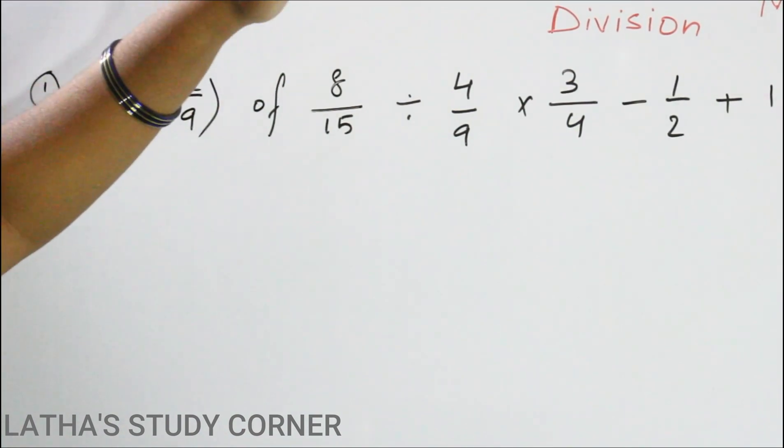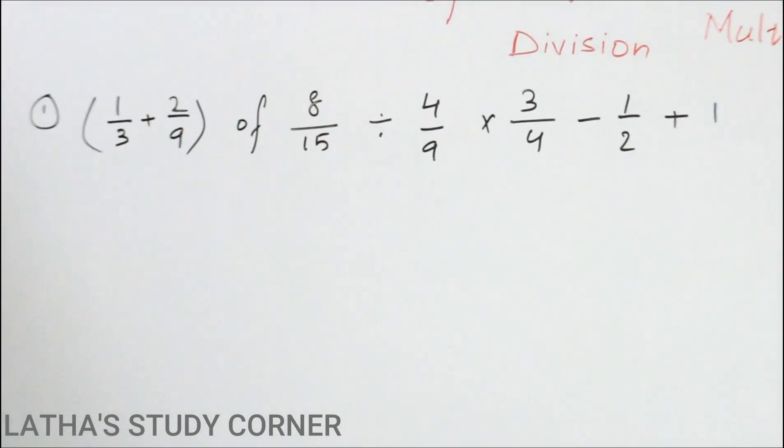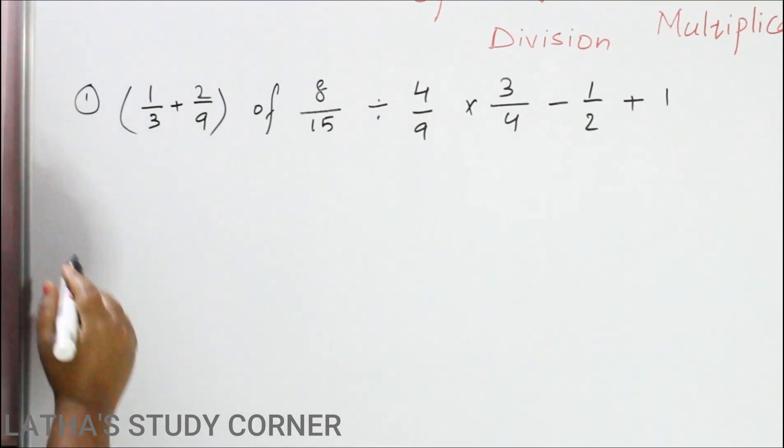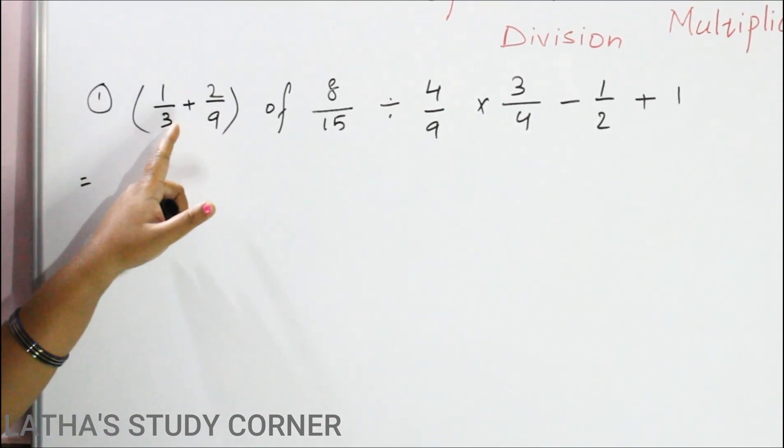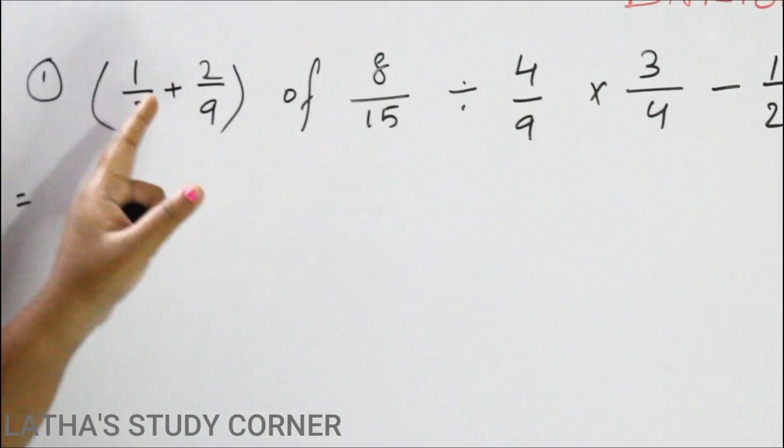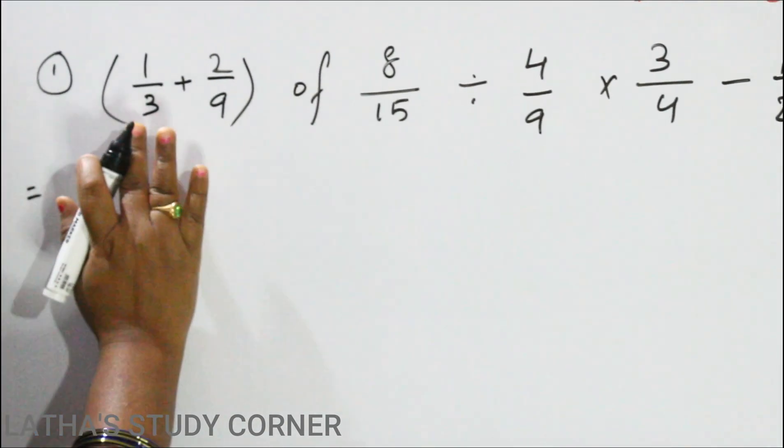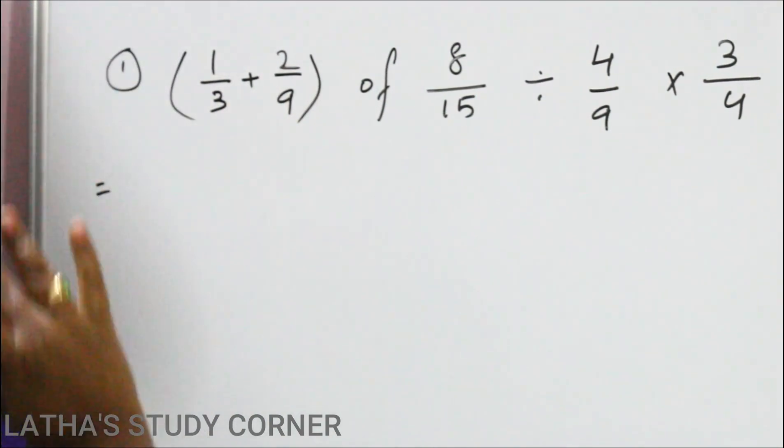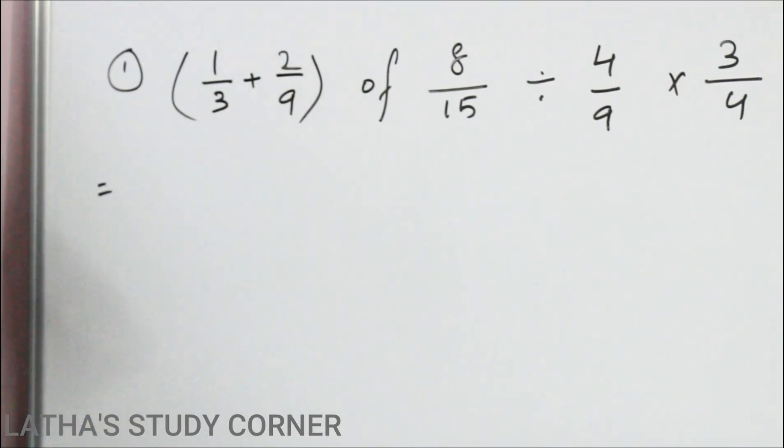BODMAS says first bracket. So whatever the operation under the bracket is there, we have to solve it first. What is the operation under the bracket? There is 1 by 3 plus 2 by 9. So we have to first solve this. To solve this first we have to take the LCM of the denominators. LCM of 3 and 9 that is 9.